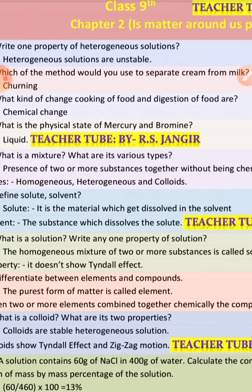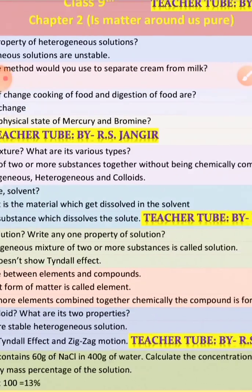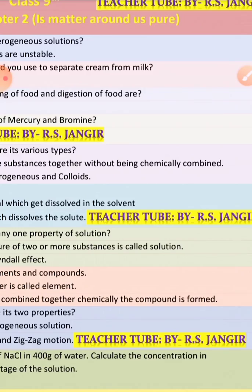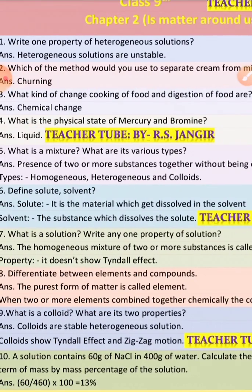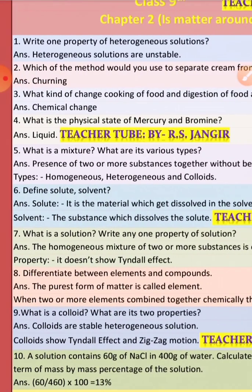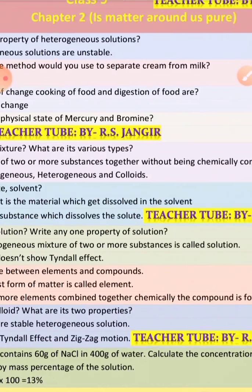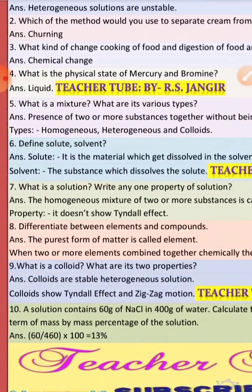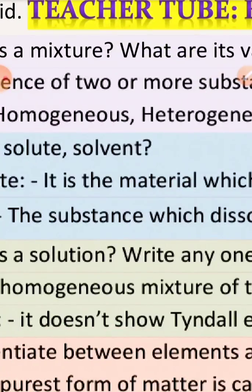They will be called compound. So presence of two or more substances together without being chemically combined is called mixture. The types of mixtures are homogeneous, heterogeneous, and colloids.